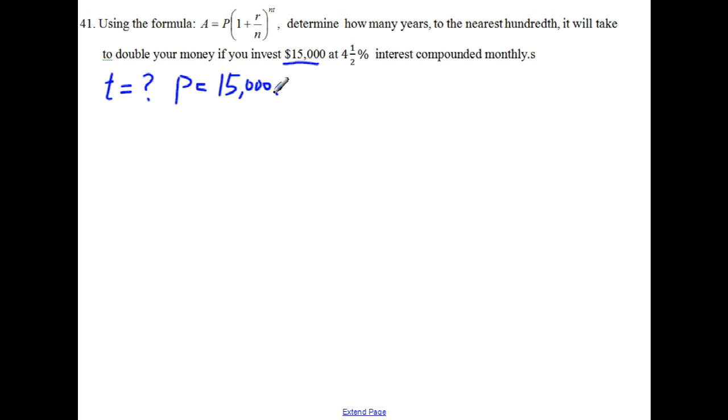And so we want to, I mean you want to double your money, this money, $15,000 at the end of the investment. So the balance at the end of the investment must be twice $15,000, that is $30,000.